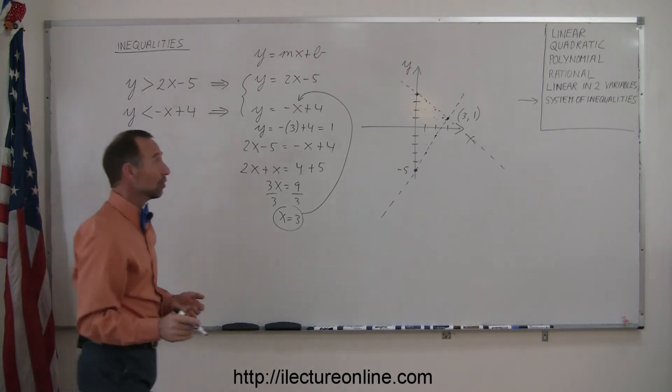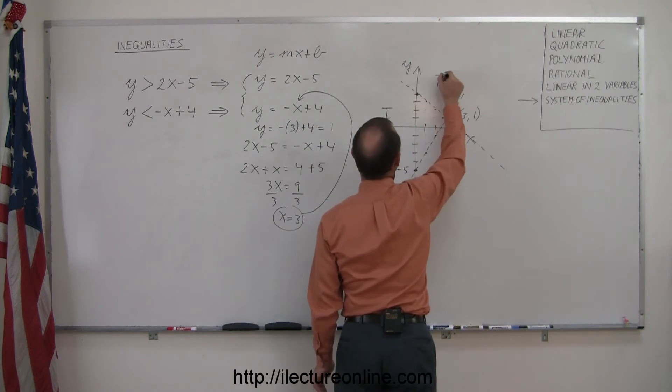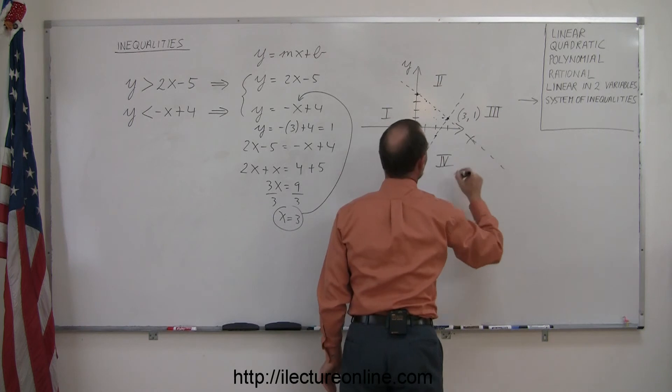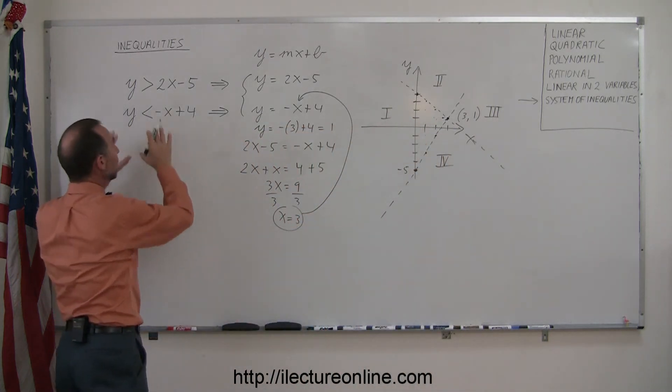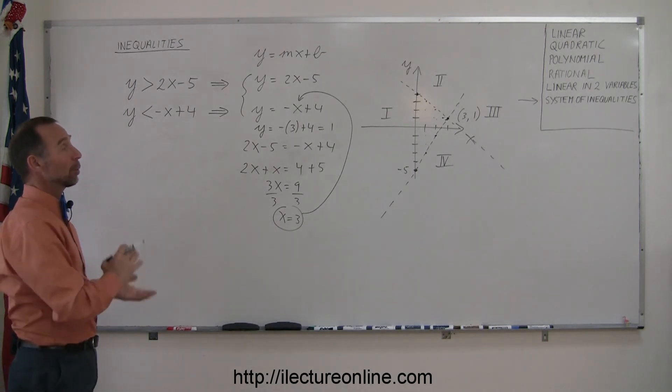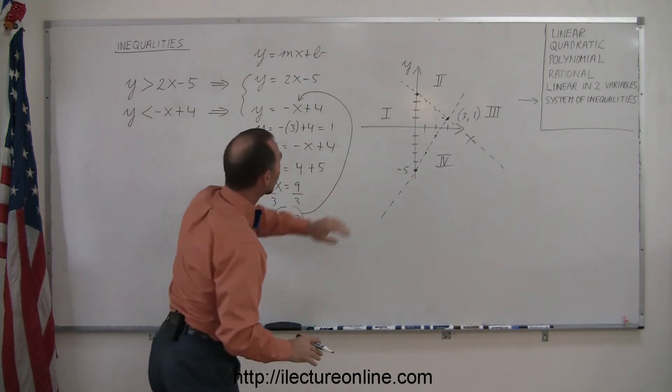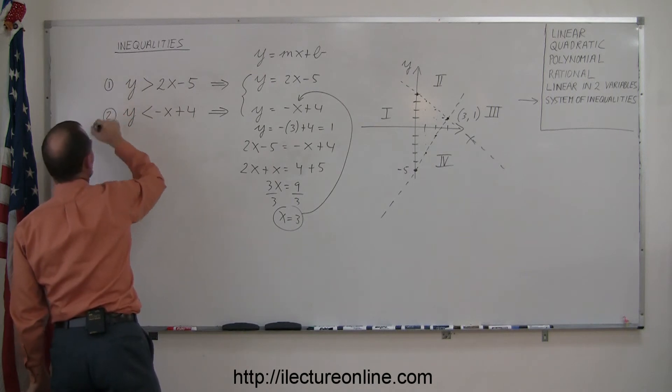All right, now we have a lot of regions. We have region 1, region 2, region 3, and region 4. Which of those four regions satisfies both inequalities at the same time? Well, what we do is we take one inequality at a time, find the line that's associated with that inequality. So the first one right here, let's just mark it. This is our first inequality, this is our second inequality.